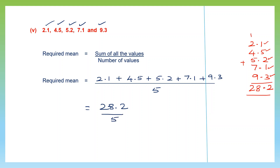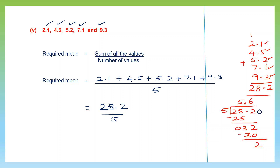We need to divide 28.2 by 5. Taking 28: 5 fives are 25, remainder 3. Carry the point and bring down the 2, giving 32. 5 sixes are 30, remainder 2. Add a zero and bring down — it's 20. 5 fours are 20, remainder 0. So we get 5.64. The mean is 5.64.